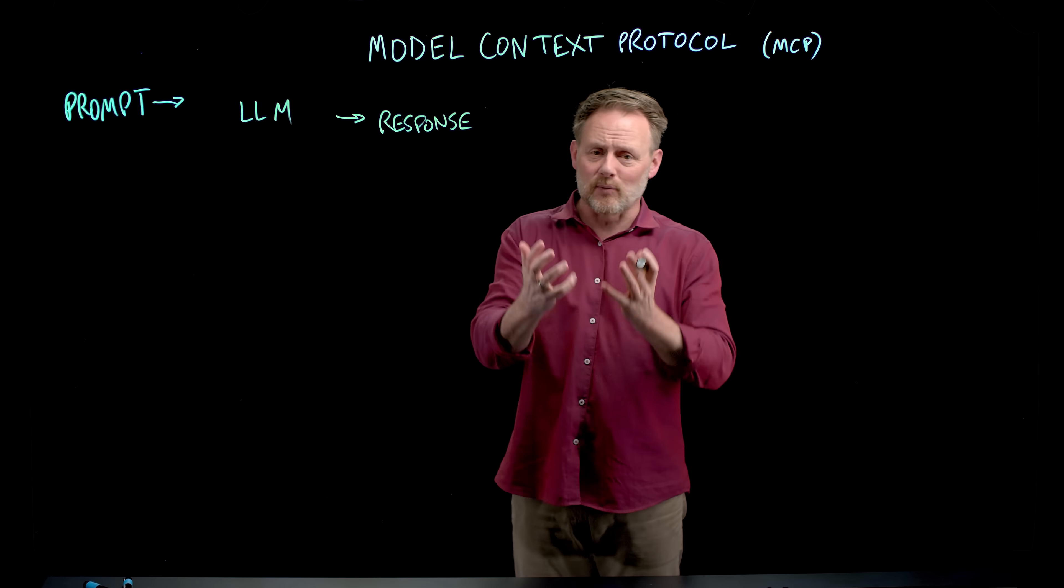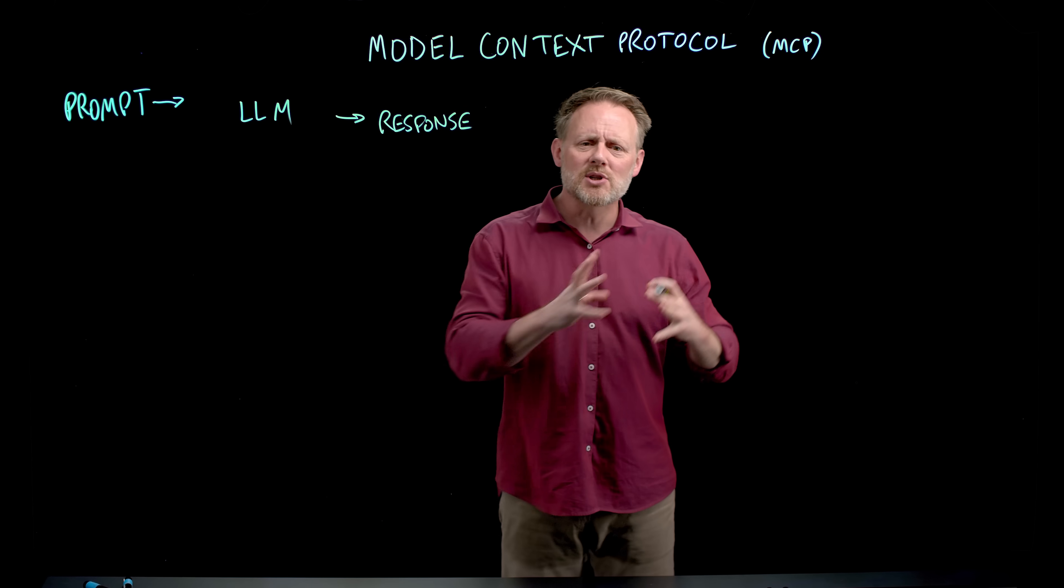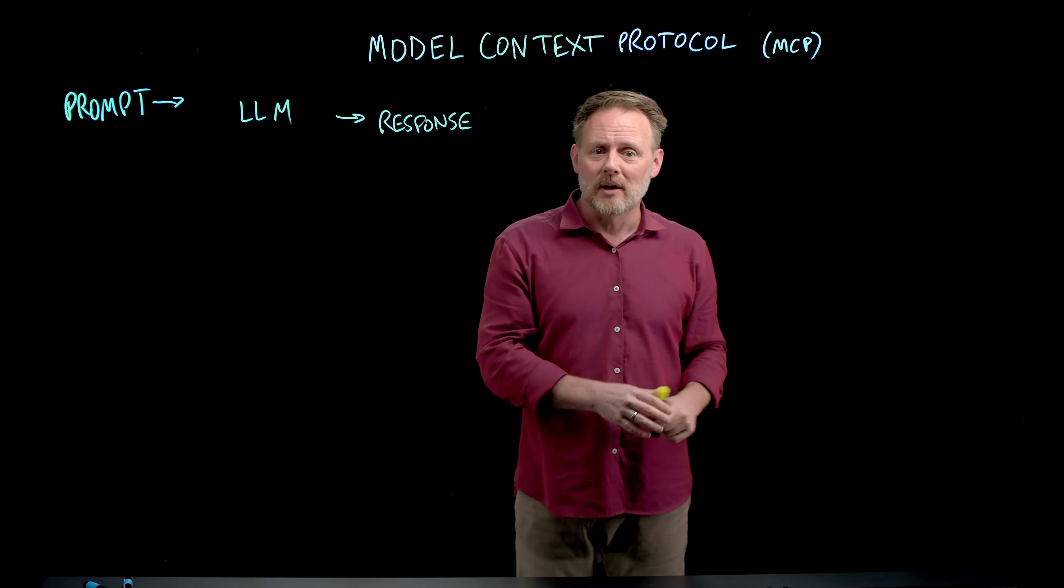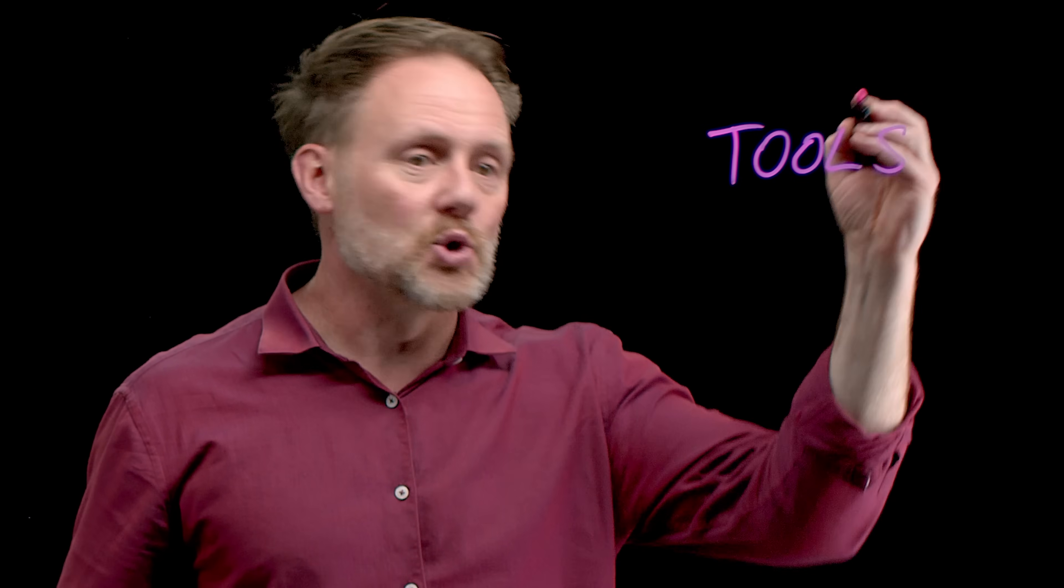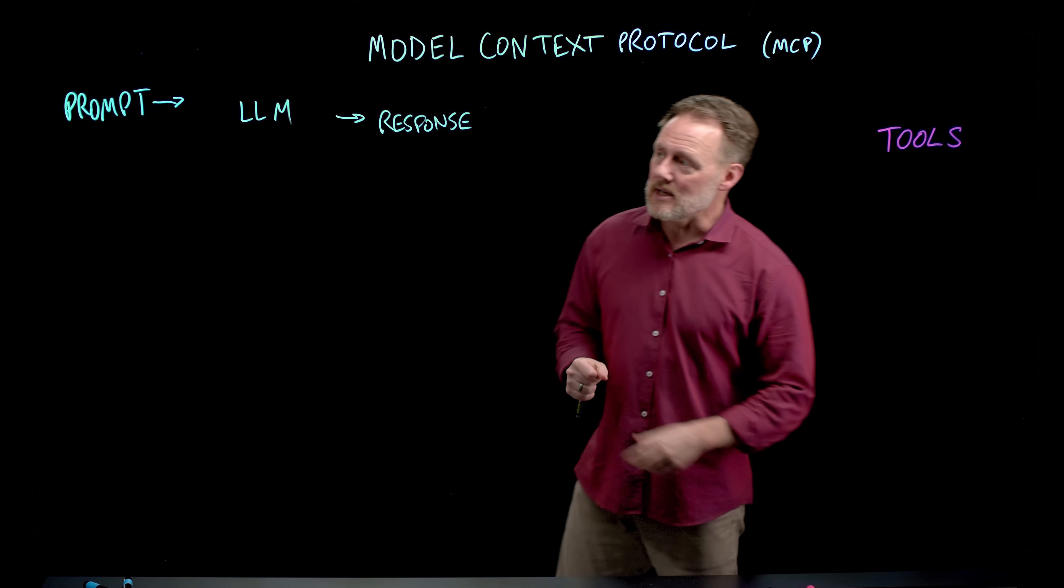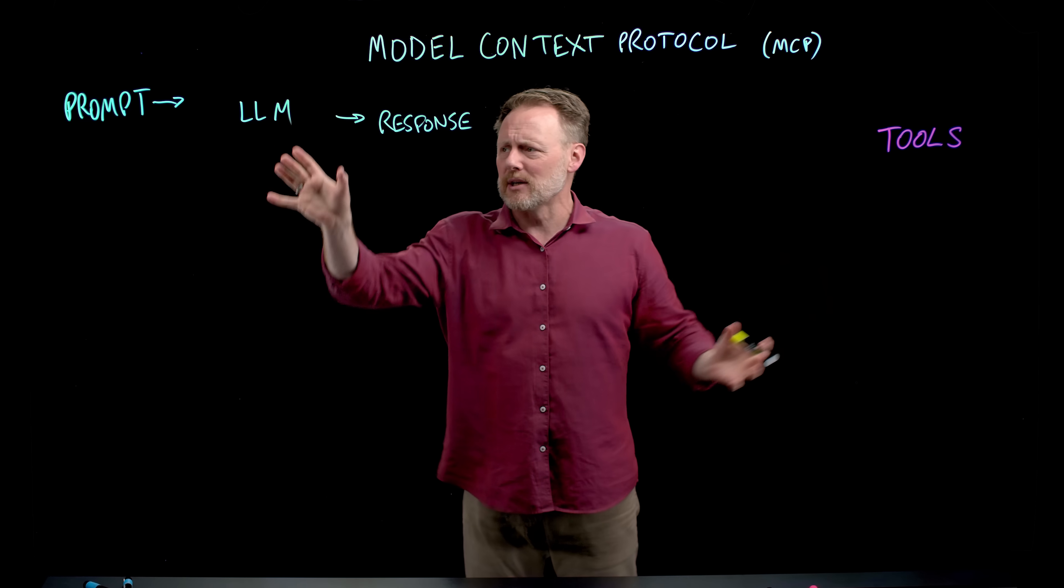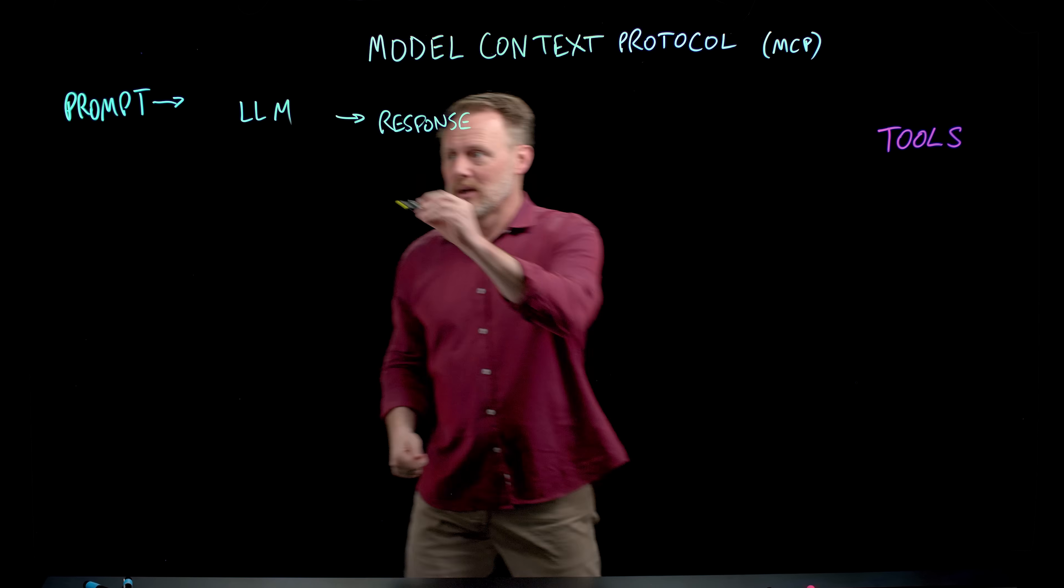That response is just words. And if words are what you want, you're doing fine. But what if you want to do something? That's what agentic AI is all about. You want to cause effects out in the world. The AI needs to be able to take those actions or invoke what we call tools. It also needs more up-to-date information or maybe just broader information than what's available in that core foundation model.